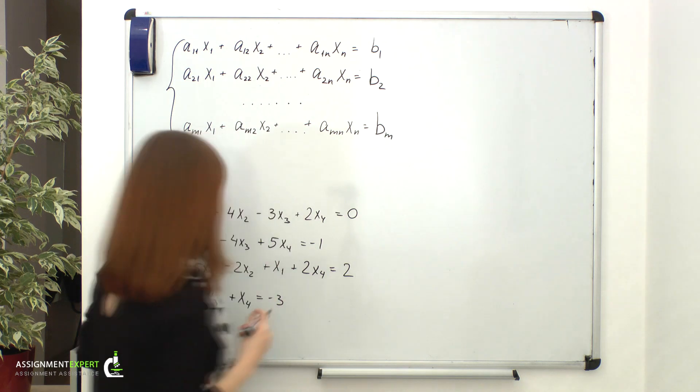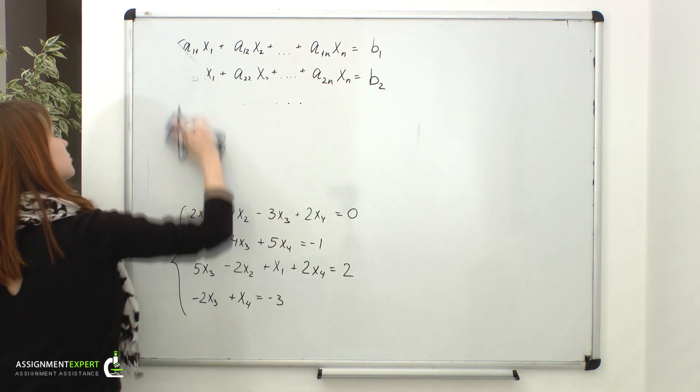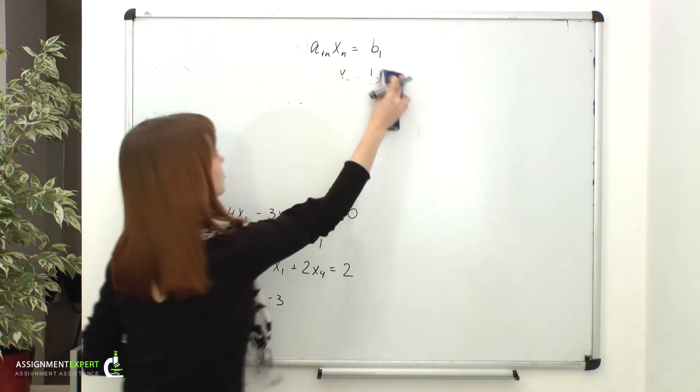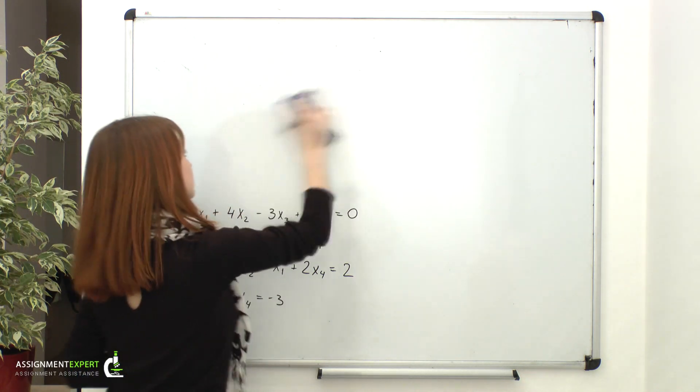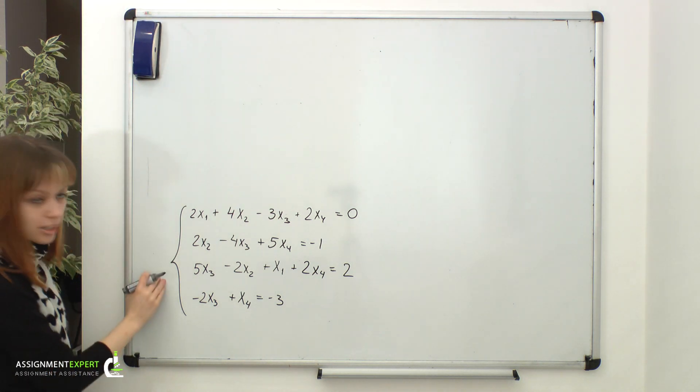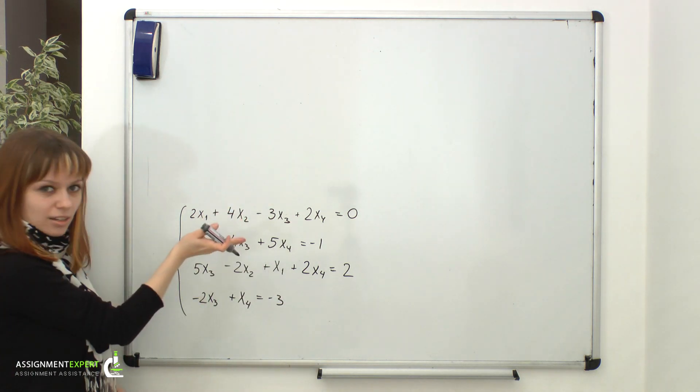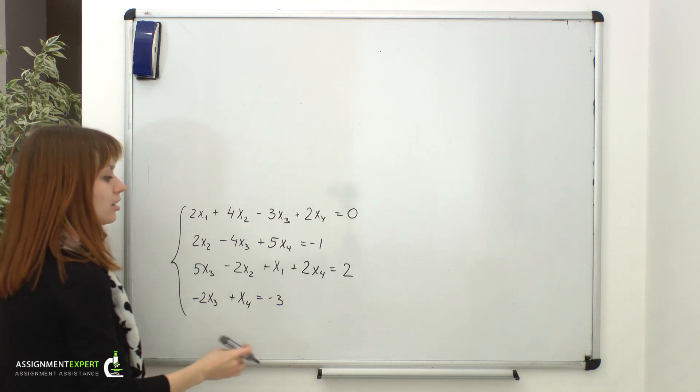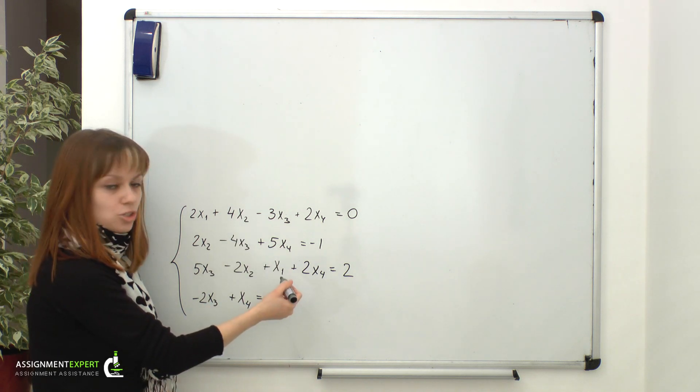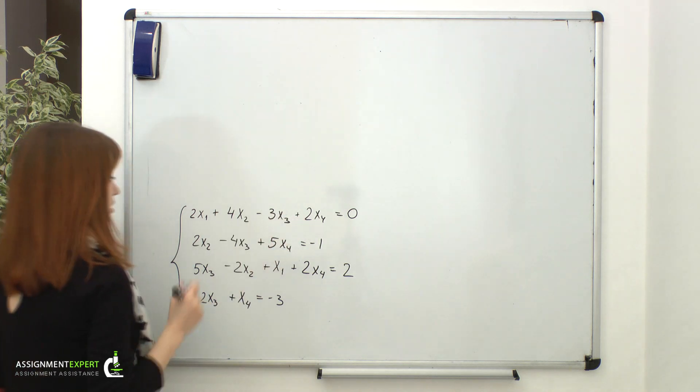Also, it is convenient to put equations which are fully stuffed with all the unknowns in the top. So let's see what our system might look like. As you can see, first and third equations are fully stuffed with unknowns. So, I'll put third equation into the second line. Also, I'll put x1 into the first position and x3, or 5x3 into the third position, so that I form columns of x1's, x2's, x3's and x4's.